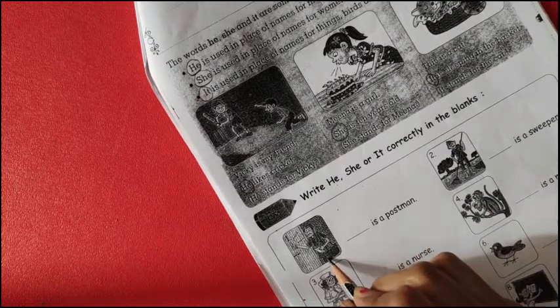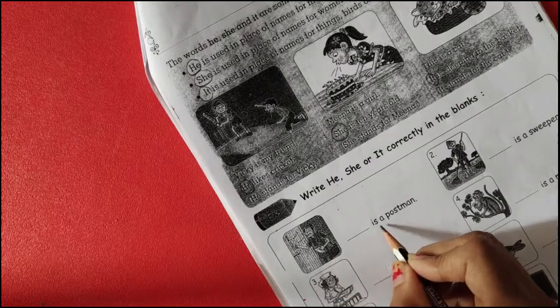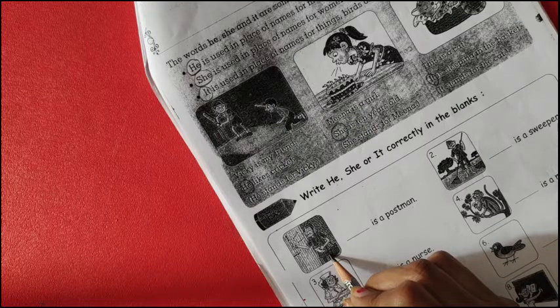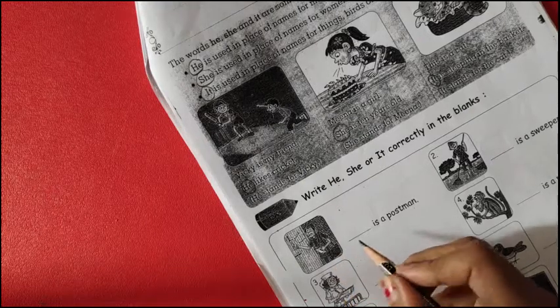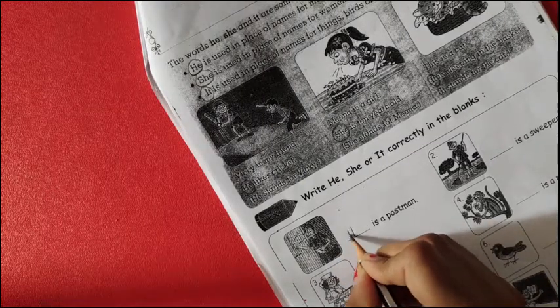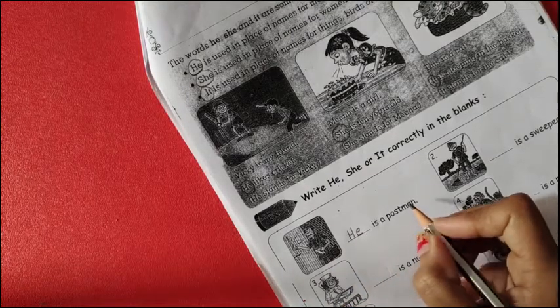The first picture is a postman. Dash is a postman. Postman is a man. So here we are going to use he. So write here, he is a postman.